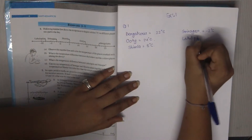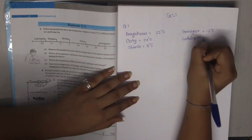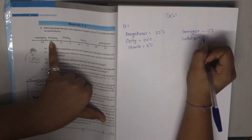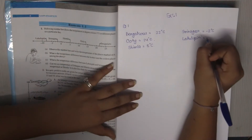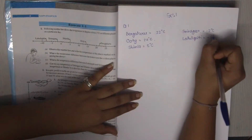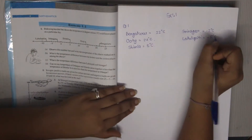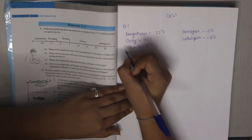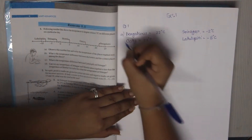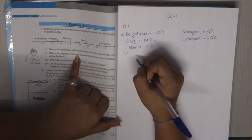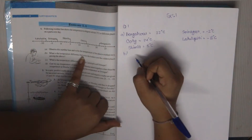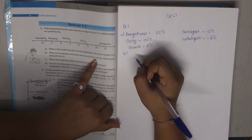Srinagar is minus 2 degree Celsius. Lahul Spiti is minus 8 degree Celsius.